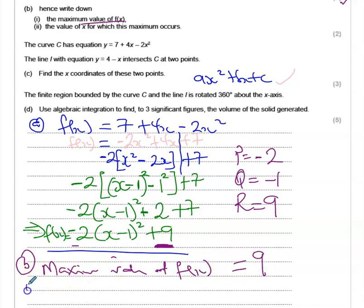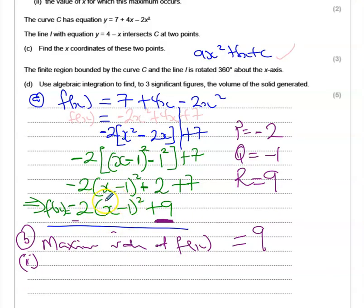Now the second part of it, where it asks for the value of x for which this maximum occurs, you go back to your brackets. Whatever expression is in that bracket, equate that expression to zero, and that would give you x equals 1. So that tells us that the maximum value occurs at x equal to 1. So the coordinates of that maximum point is going to be (1, 9).